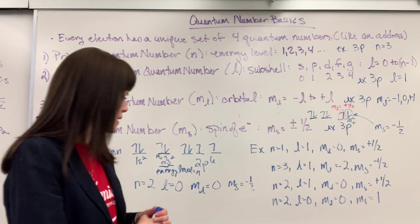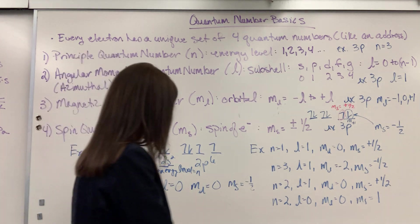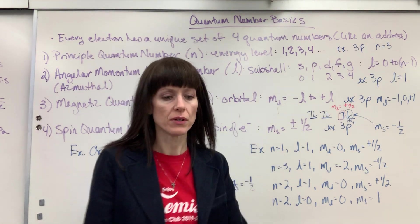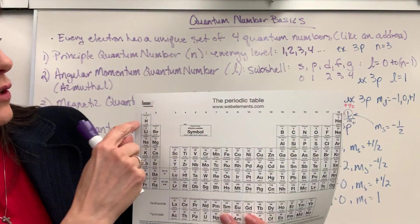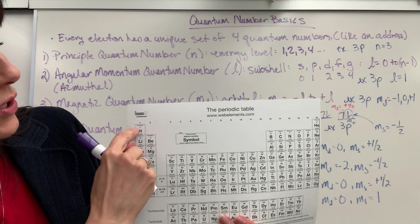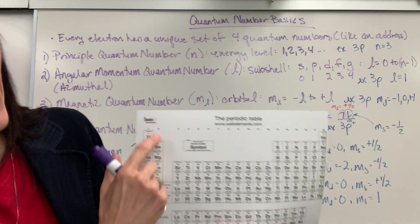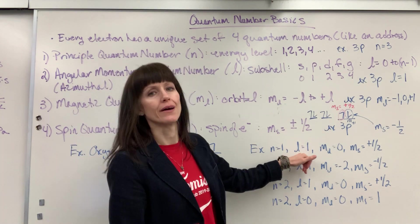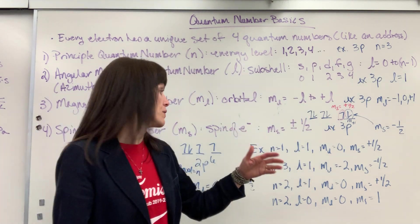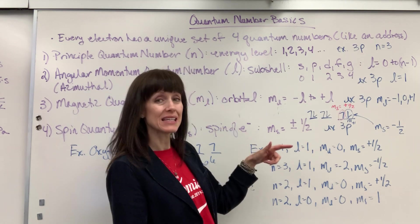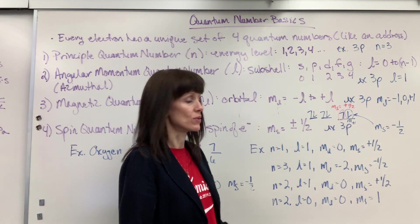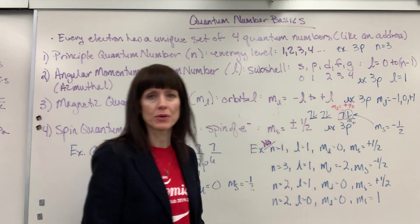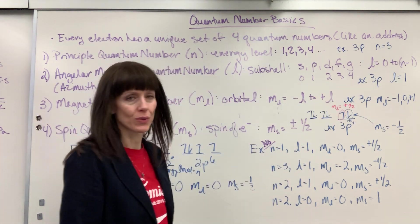Now let's come over and see if these sets are permissible. N equals 1 — first energy level, which has hydrogen and helium, both in the S subshell. L is 1 — I see the problem. Remember, L has to be at least one less than N; they can never be equal. So this is a no — not permissible because N cannot equal L. L has to be at least one less than N.